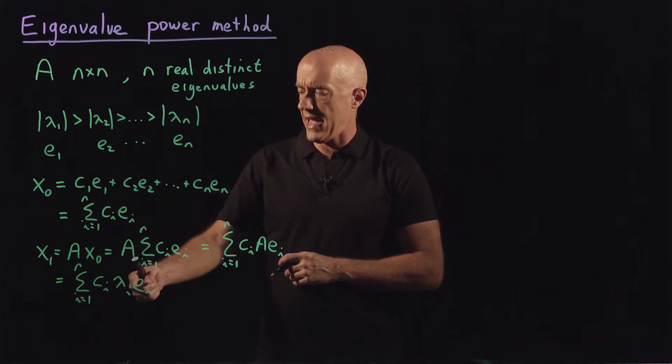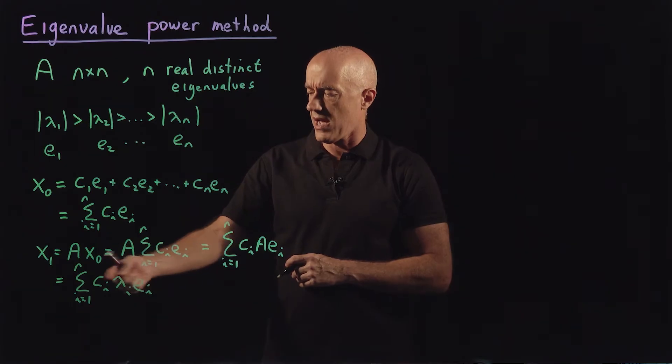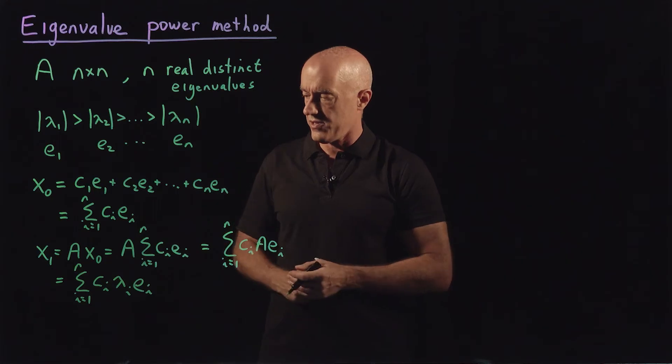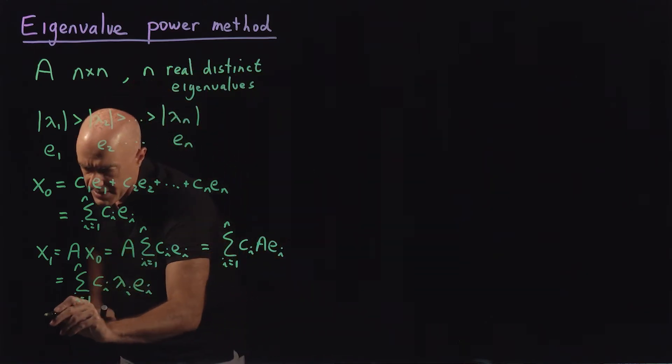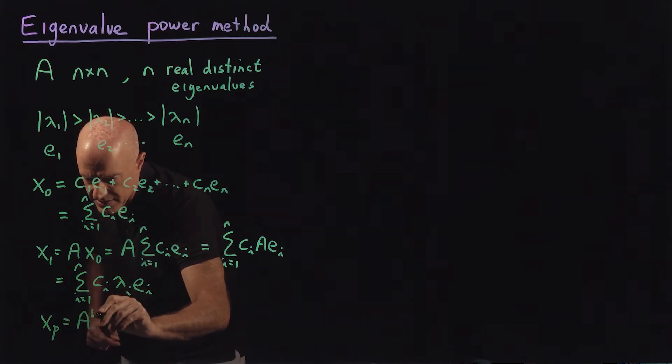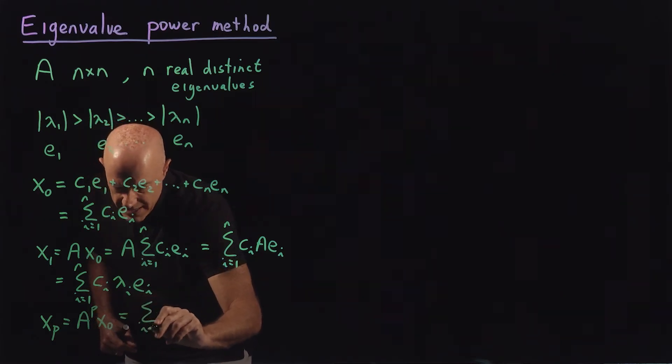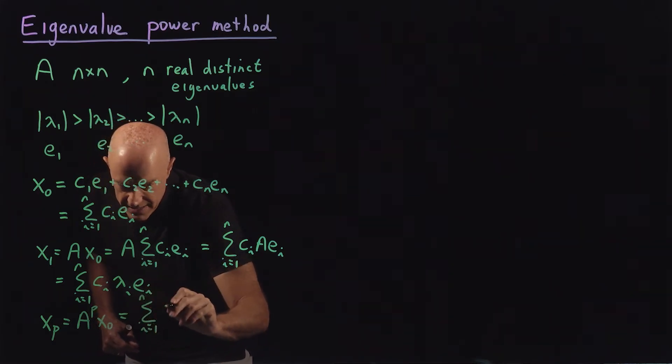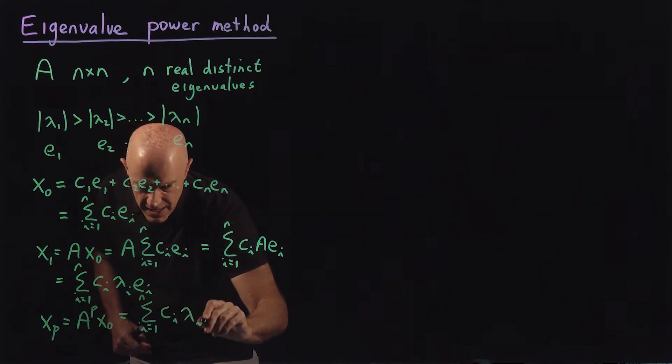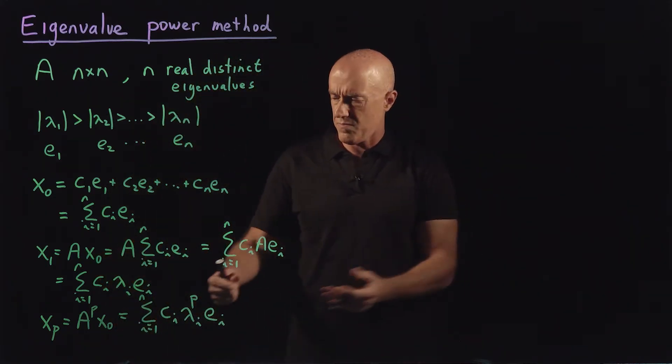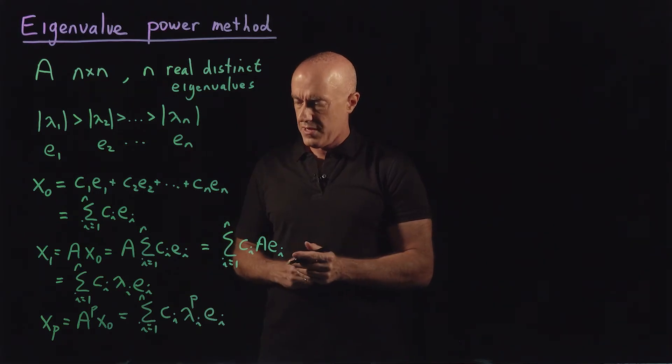So multiplication by a just means that we multiply each term in this sum by the corresponding eigenvalue lambda i. So what happens if we do this p times? So x sub p, which is going to be a raised to the p power times x naught, that's equal to the sum from i equals one to n of c i lambda i raised to the p power times e i. Just multiply by the eigenvalue p times.